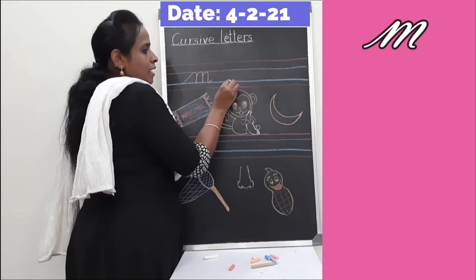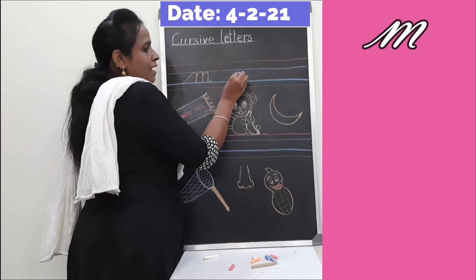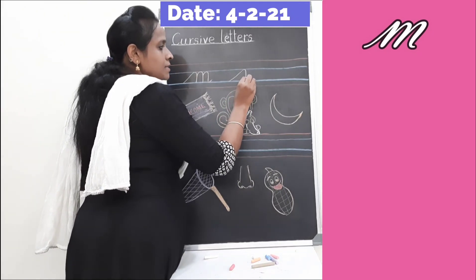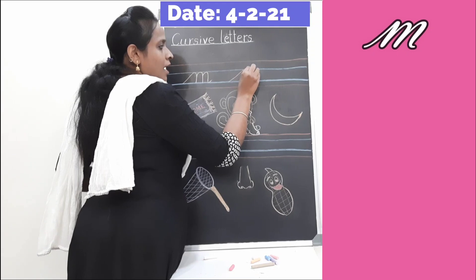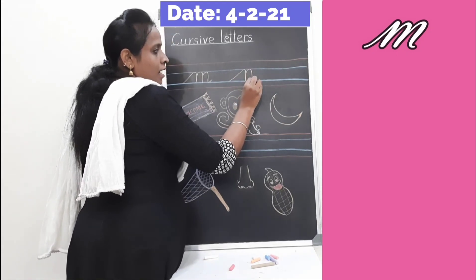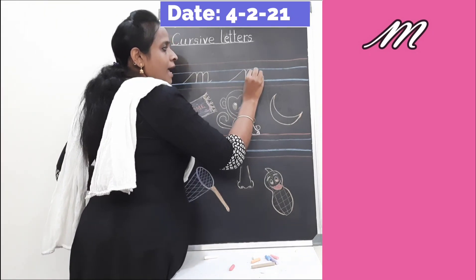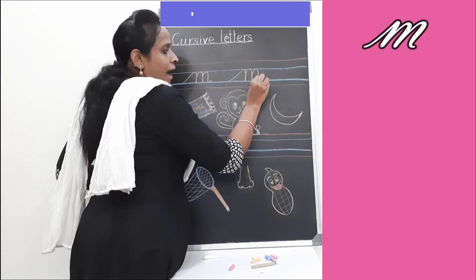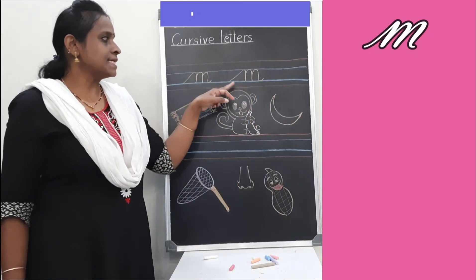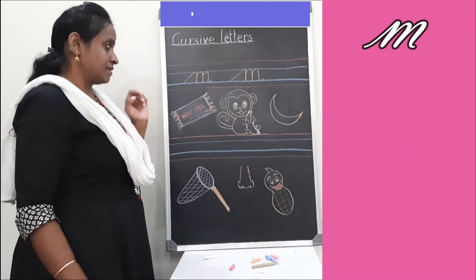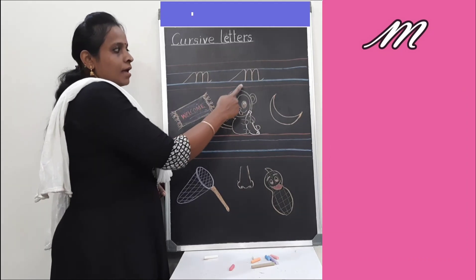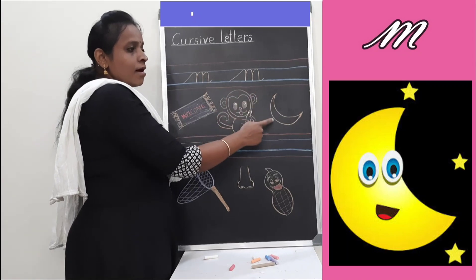From the second blue line, go up and touch the first blue line with a sliding line. Take a curve, come down and touch the second blue line. Go up on the same line, take a curve, come down and touch the second blue line with a small tip. This is cursive M. M for man, M for monkey, M for moon.